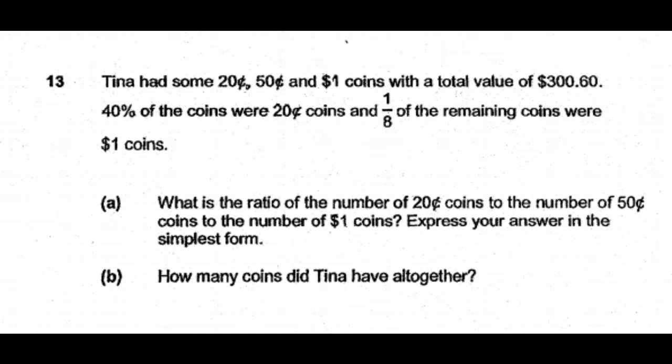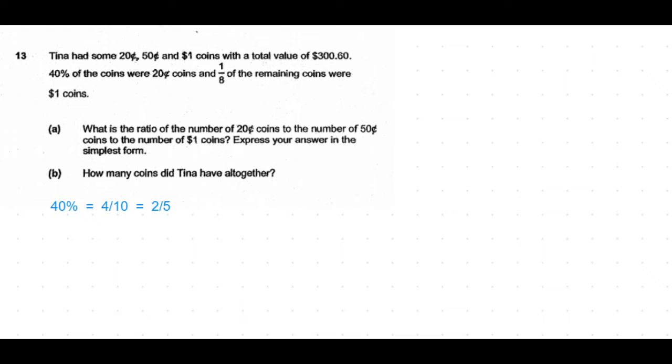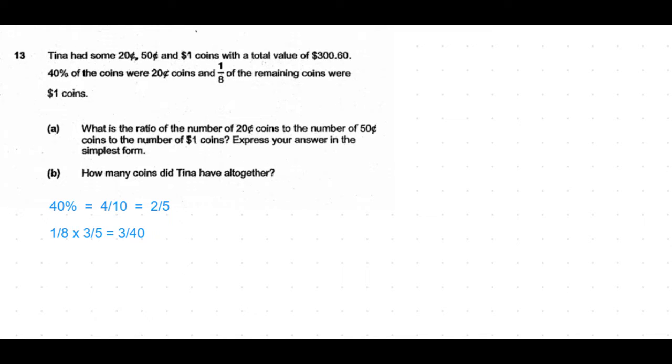Before coming to the question, let's see: 40% of the coins is the same as 4/10, which is same as 2/5. So two-fifths of the coins were 20 cent coins and one-eighth of the remaining coins. The remainder is 3/5, so 1/8 of 3/5 is 1/8 times 3/5, which is 3/40. This means we take the total number of coins as 40 units, then it's easy to indicate in terms of units.